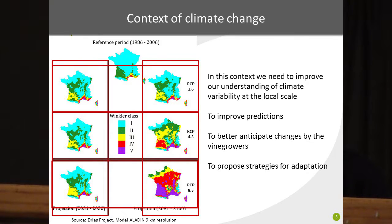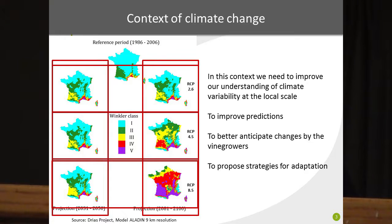We are in a context of climate change, and in this context we need to improve our understanding of climate variability at local scale to improve our predictions and to better anticipate change by the wine grower, and at the end to propose adaptation strategies.